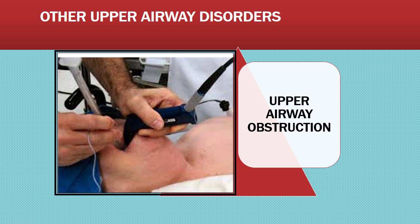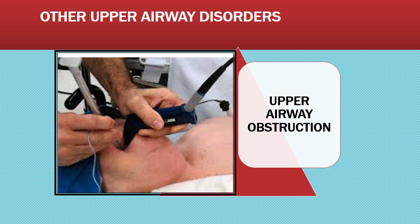Another option is endotracheal intubation, performed by inserting a tube into the trachea via the nose or mouth, done by specially trained personnel. We have talked extensively about a tracheotomy, which is a surgical incision into the trachea for the purpose of establishing an airway. In an upper airway obstruction situation this would be done emergently, but it can also be a scheduled procedure.